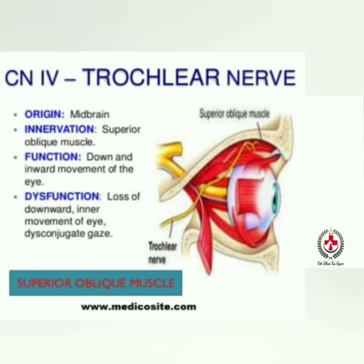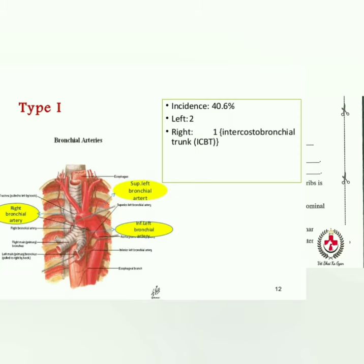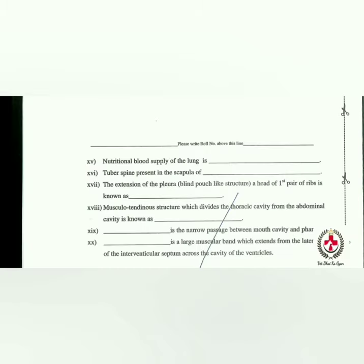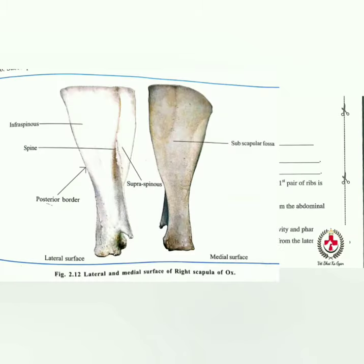The nutritional blood supply of the lung is provided by the bronchial artery. The tuber spine is present in the lateral aspect of the scapula — the spine of the scapula is situated in the lateral aspect.